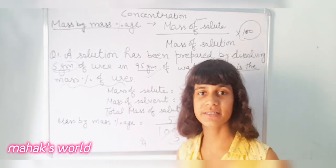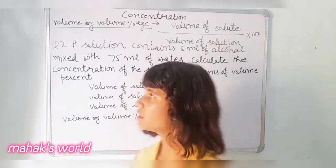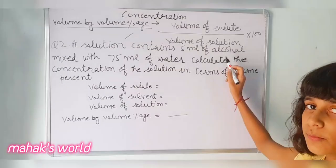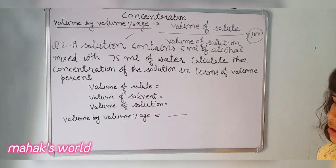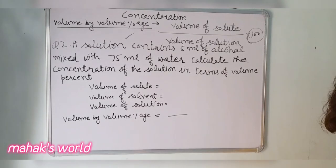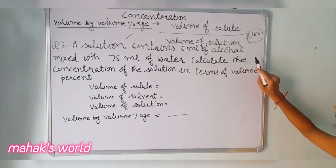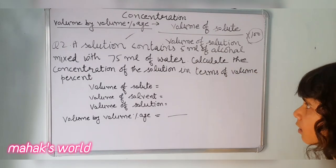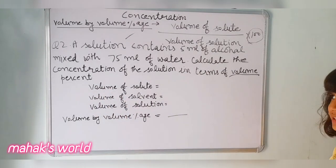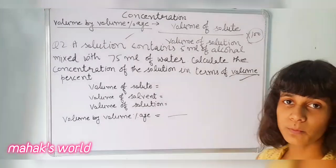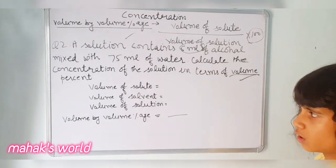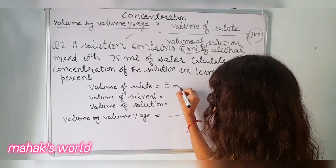Our second method is volume by volume percentage. In this, it is volume of solute divided by volume of solution, multiplied by 100. This is the formula of volume by volume percentage. Now we will do a question related to this: a solution contains 5 ml of alcohol mixed with 75 ml of water — calculate the concentration of the solution in terms of volume percentage. In this question the solute is 5 ml of alcohol, so the volume of solute is 5 ml.